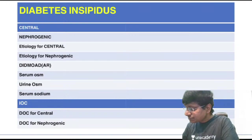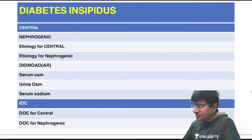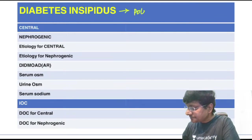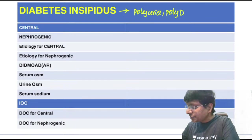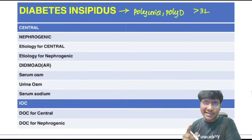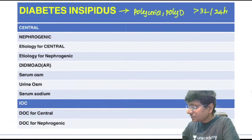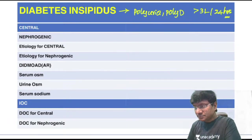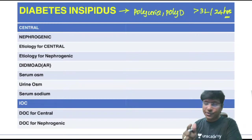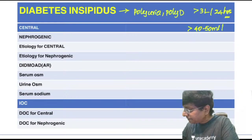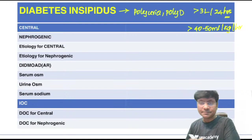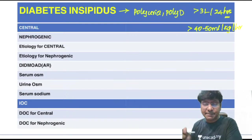The first topic is diabetes insipidus. Diabetes insipidus is a disorder characterized by polyuria and polydipsia. When we use the word polyuria, the urine output should be more than 3 liters per 24 hours, or more than 40 to 50 ml per kg per hour.